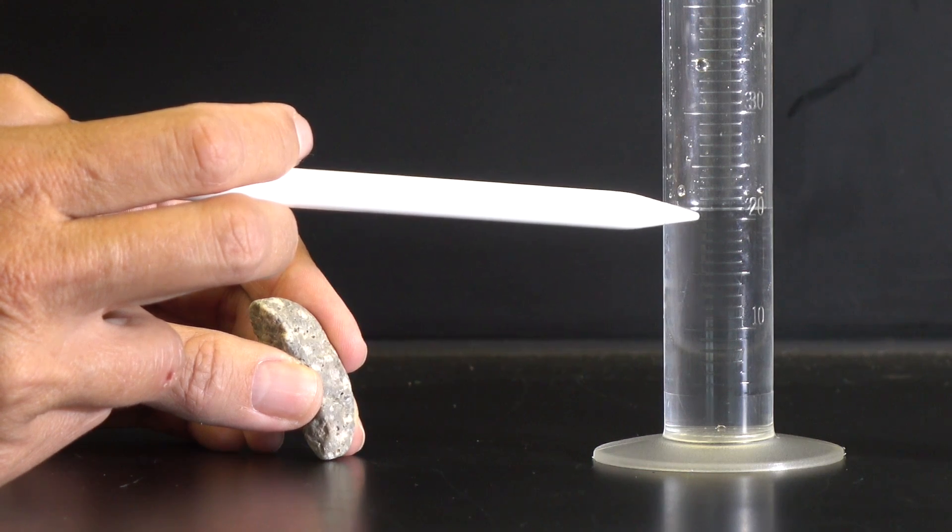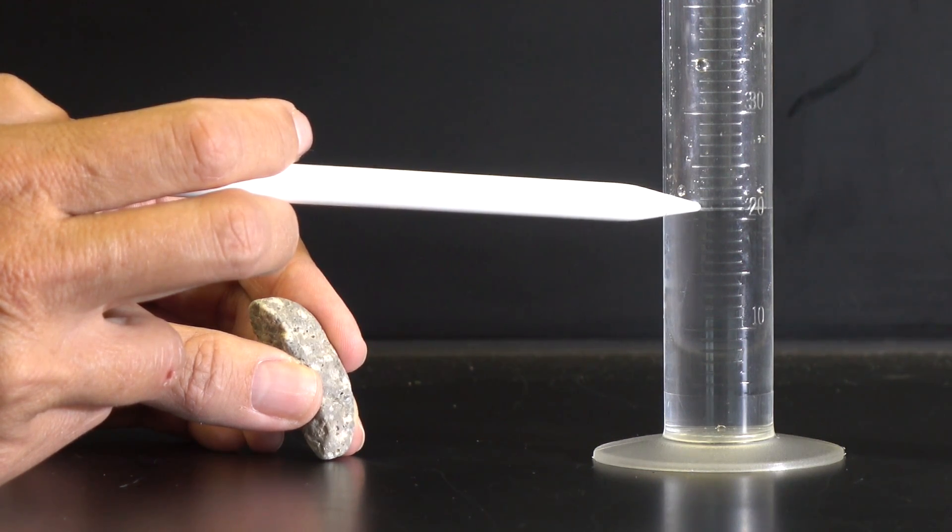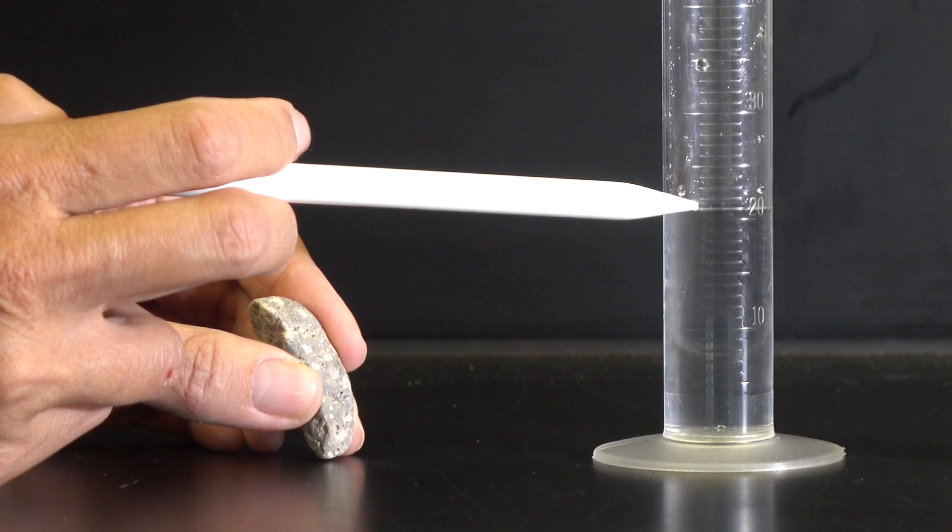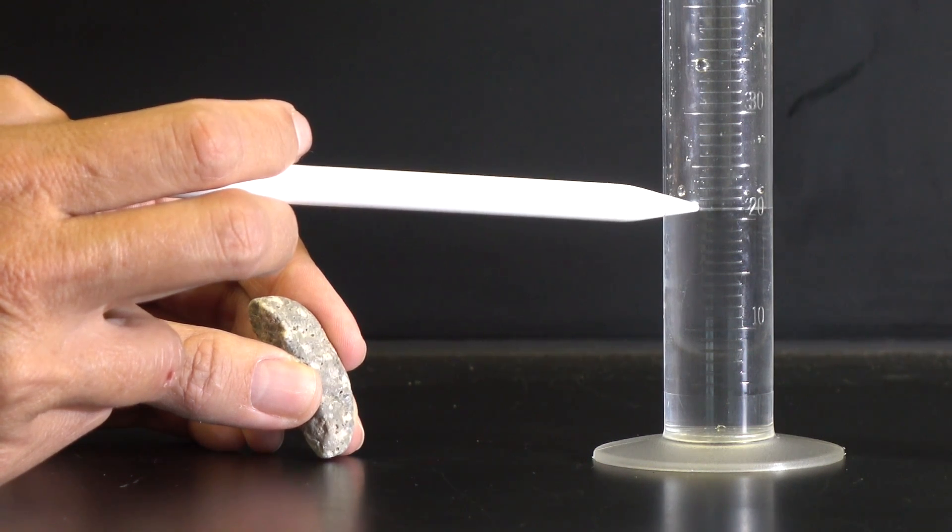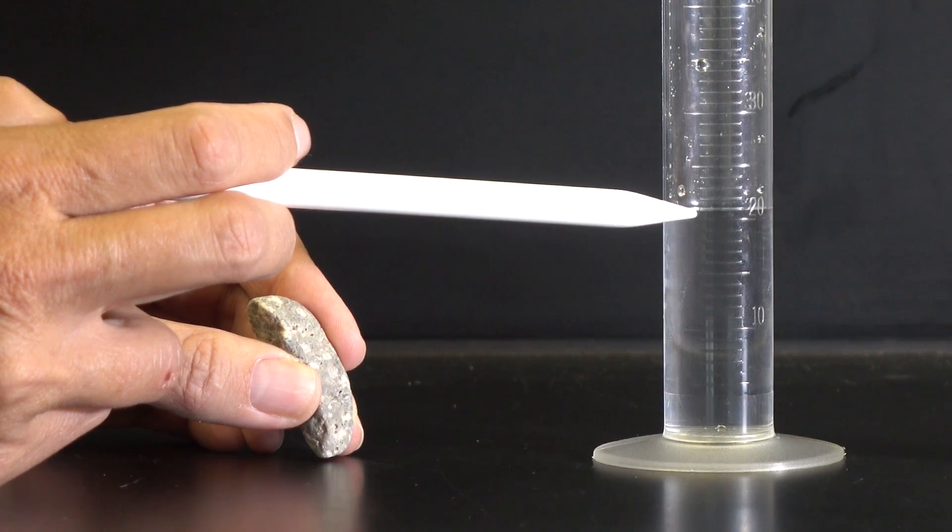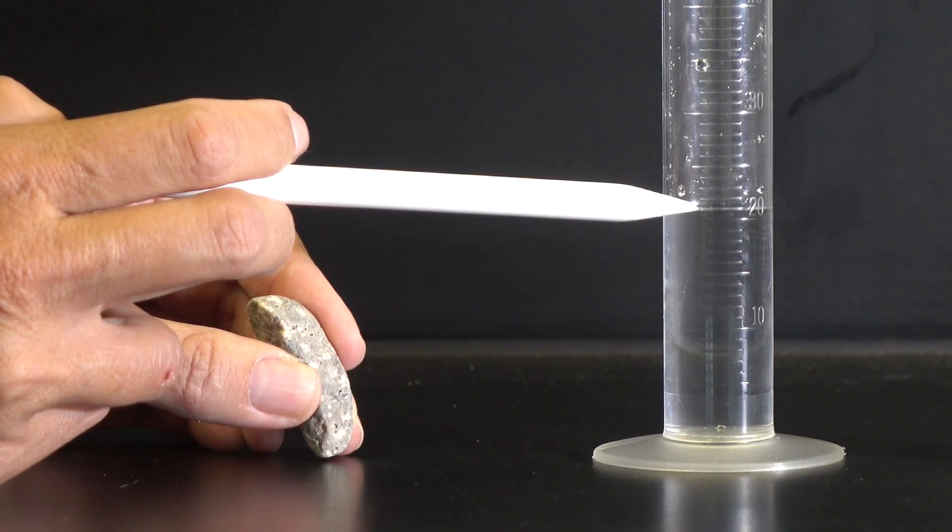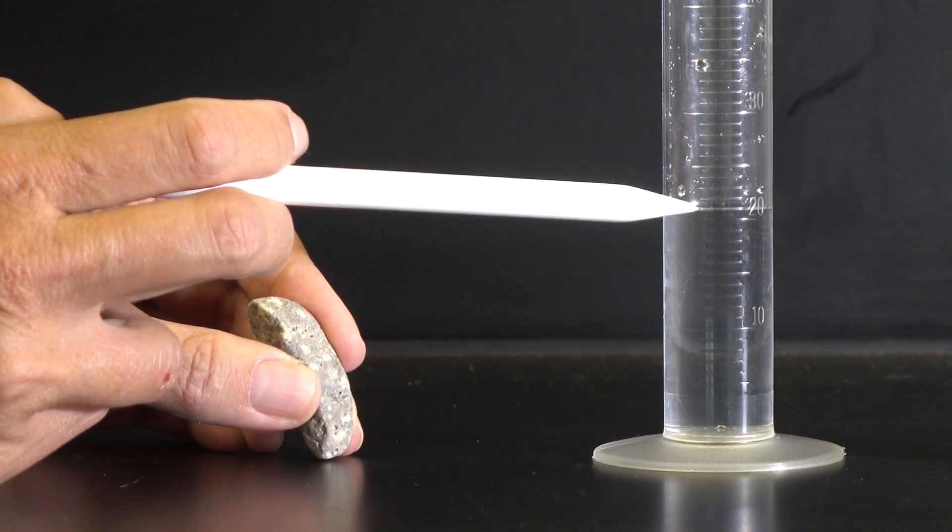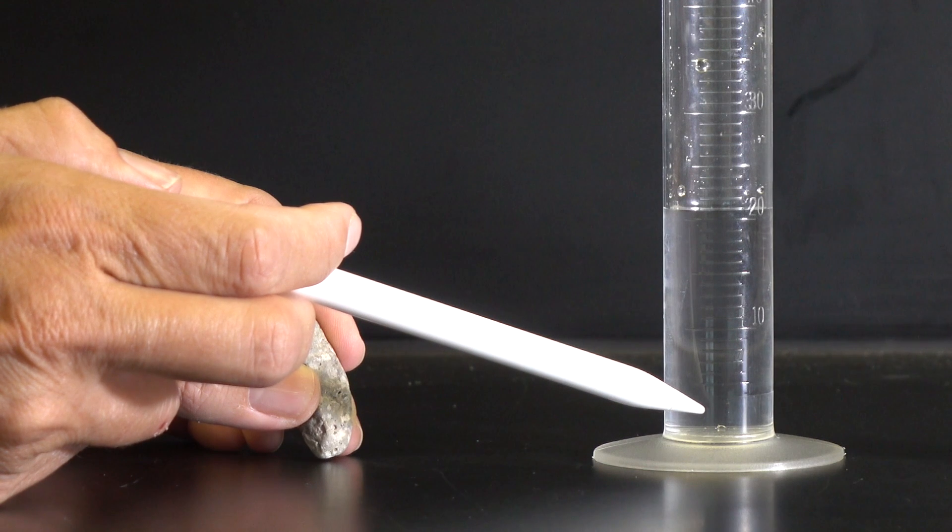And I am going to say that the bottom part of the meniscus rests on the eighth of the ten imaginary lines between 20 and 21. So I write down a number 20.8 milliliters for the volume of this water alone.